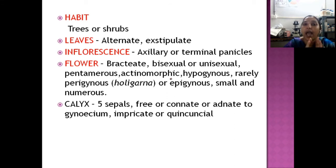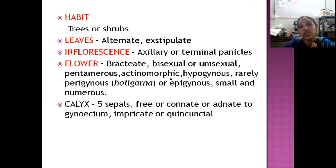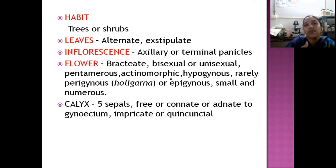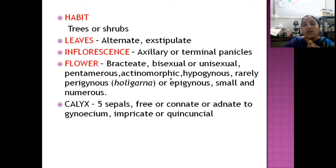The inflorescence may be axillary or terminal panicles. Flowers are bractate, bisexual; rarely unisexual flowers are also present in this family. They are pentamerous — multiples of 5 — and actinomorphic, meaning you can cut the flower into any plane to get equal halves. They are hypogynous, that is, ovary is superior; perigynous flowers are present in Holigarna arnotiana, and rarely epigynous flowers occur.